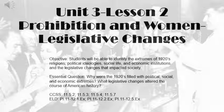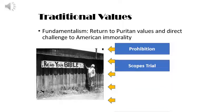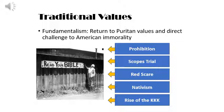Unit 3 Lesson 2: Prohibition and Women — the Legislative Changes. Students will be able to identify the extremes of 1920s religions, political ideologies, social life, and economic institutions, and the legislative changes that impacted society. Our essential question: why were the 1920s filled with political, social, and economic extremes? What legislative changes altered the course of American history?